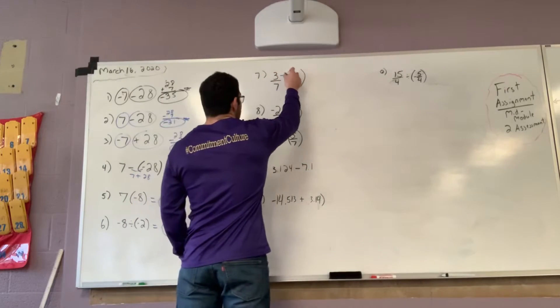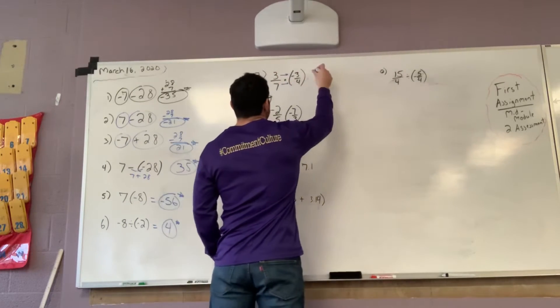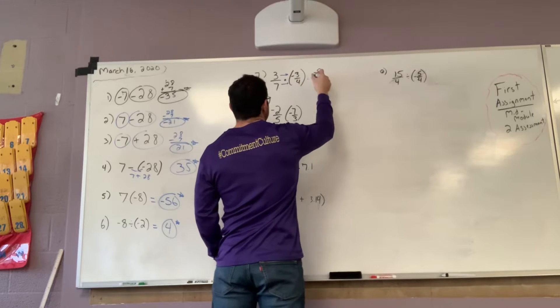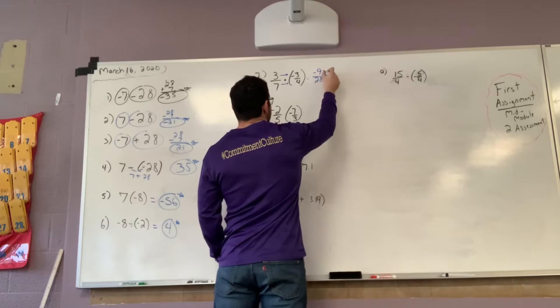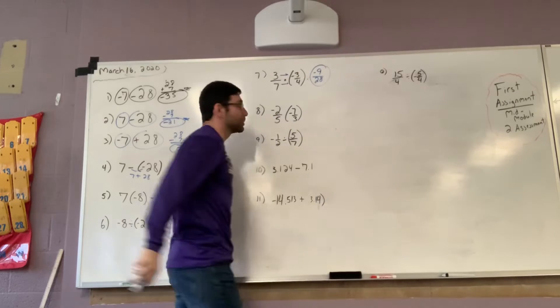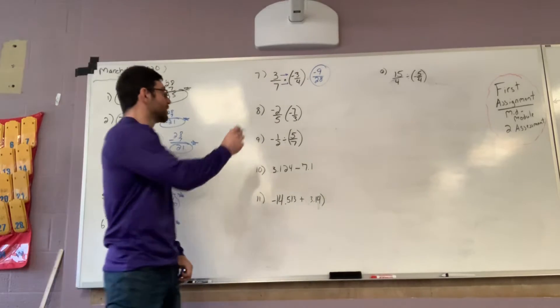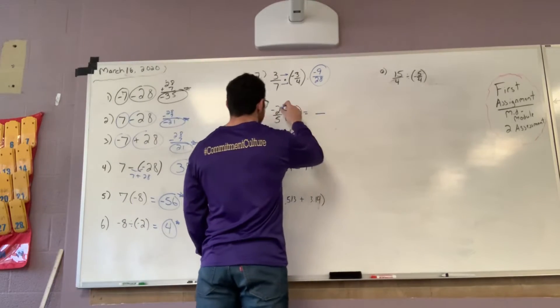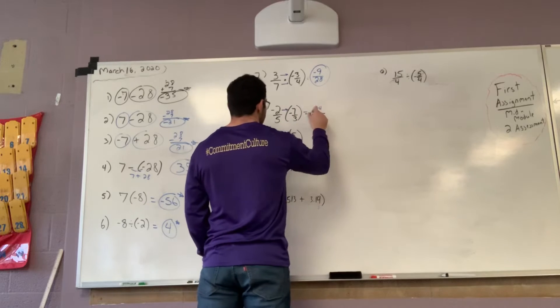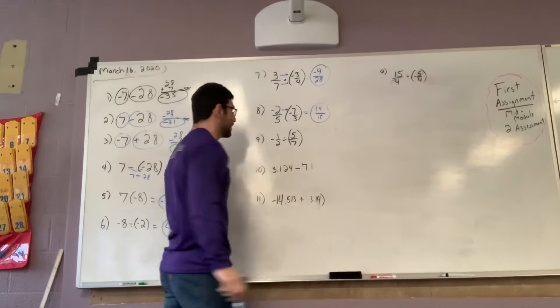Okay, multiplication. Multiply across. 3 times negative 3 is negative 9. 7 times 4 is 28. Those are not divisible. We keep it there because it's one negative. Two negatives, I know this is going to be positive. Multiply across is 14 15ths. Cannot simplify. Great.